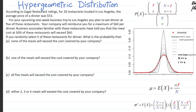According to Zagat restaurant ratings, for 20 restaurants located in Los Angeles, the average price of a dinner was $53. For your upcoming one-week business trip to LA, you plan to eat dinner at five of these restaurants. Your company will reimburse you for a maximum of $60 per dinner. Business associates have told you that the meal cost at 30% of these restaurants will exceed $60. So 0.3 times 20 restaurants means six restaurants are expensive — let's name them R.